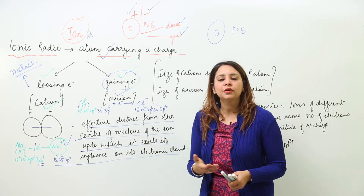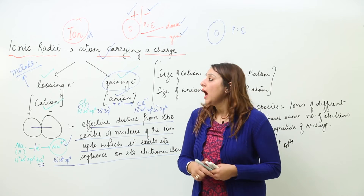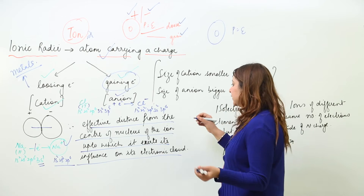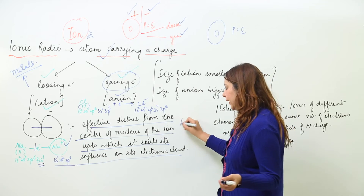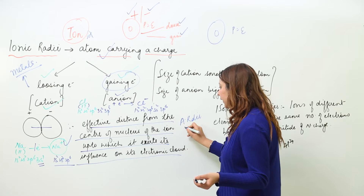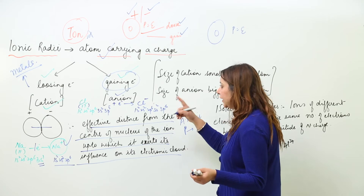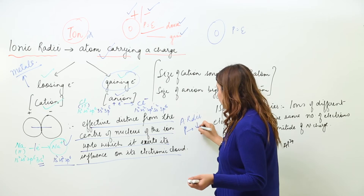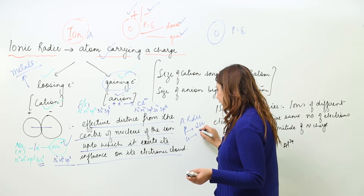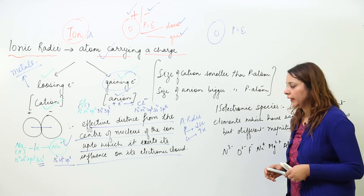Ionic radii vary in the same way as atomic radii vary along group and period. Along a period, ionic radii decrease, and along a group, it increases — for the same reasons as with atomic radii.